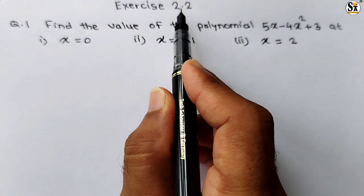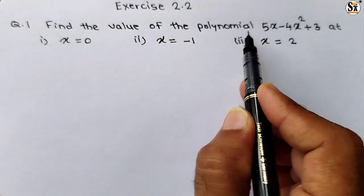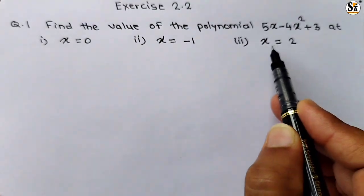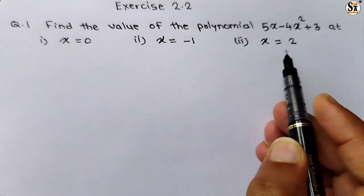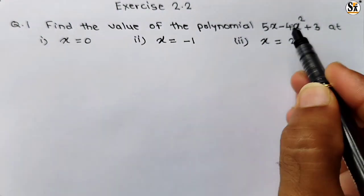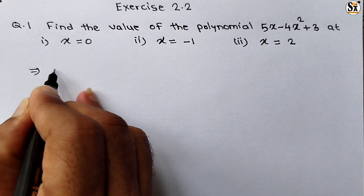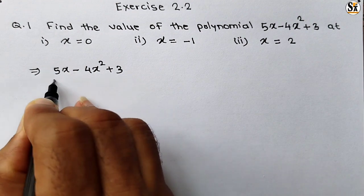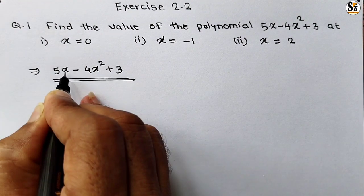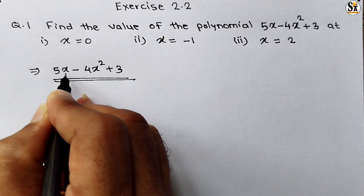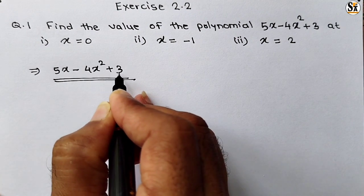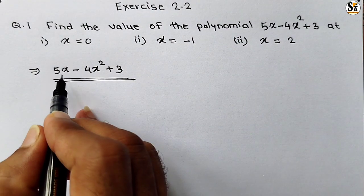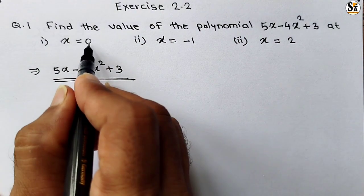See question number 1 for exercise 2.2. The question is: find the value of polynomial 5x minus 4x² plus 3 at x equal to 0, x equal to minus 1, and x equal to 2. We have to put the value of x into this polynomial. The variable is x and there are three terms: 5x, minus 4x², and constant 3. We have to put value of x as 0 in the first case.